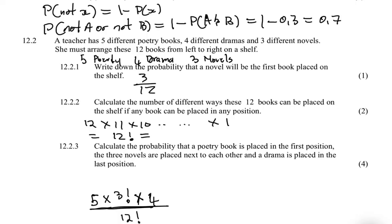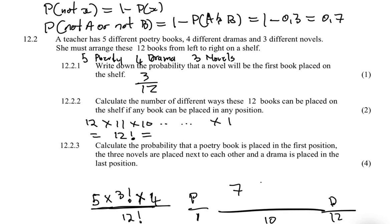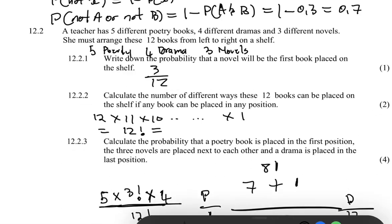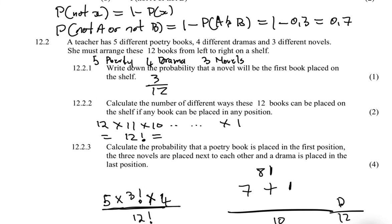With a poetry book in position 1 and a drama book in position 12, we have 10 positions remaining. The three novels must stay together as a bundle, so we treat them as one unit — leaving 7 other books plus 1 novel bundle = 8 units to arrange. Those 8 units fill 8 positions in 8 factorial ways. Multiply everything together and divide by 12 factorial for the final answer.